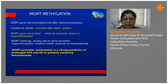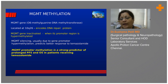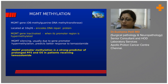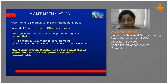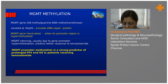When MGMT is hypermethylated and thus inactive, temozolomide — the chemotherapy we give to treat these patients — can bring about its effect, because it keeps the methyladduct open and kills the tumor cells. When MGMT is not hypermethylated, temozolomide is less likely to work and radiation becomes the primary option. Patients with MGMT-hypermethylated tumors have prolonged progression-free and overall survival when receiving temozolomide.